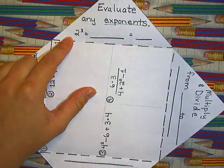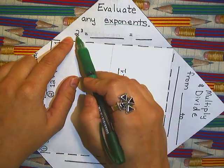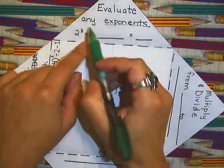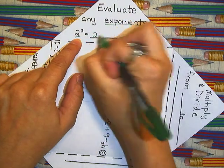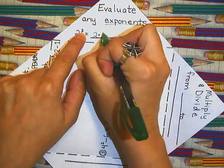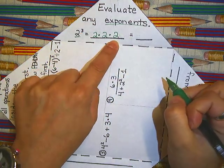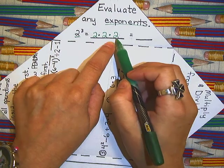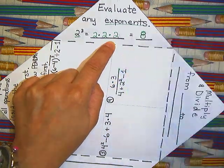Open that up. Evaluate any exponents. Evaluate just means to solve. 2 to the third power. This is not 2 times 3. This is your base. We need that multiplied by itself the number of times that your exponent indicates. So 2 times 2 times 2. And of course 2 times 2 is 4. That 4 times 2 will give you the 8.